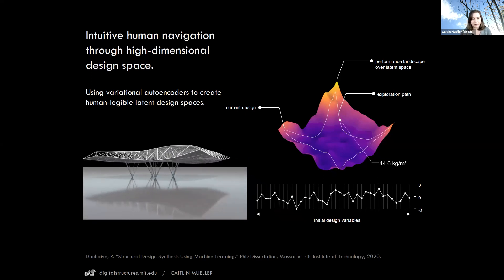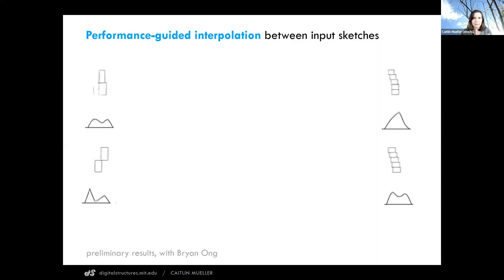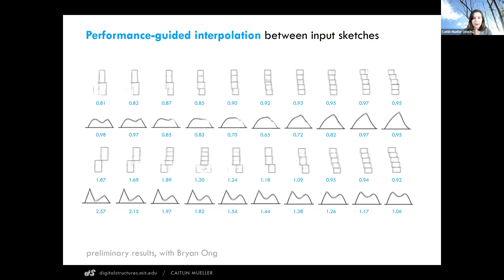For me, these human interfaces are really important. Another interesting interface is the sketch — the most classic analog design method. Are there ways using deep learning that we can link sketches with instantaneous understandings of performance, and then maybe even with the power of suggestion or combining ideas through things like interpolation?